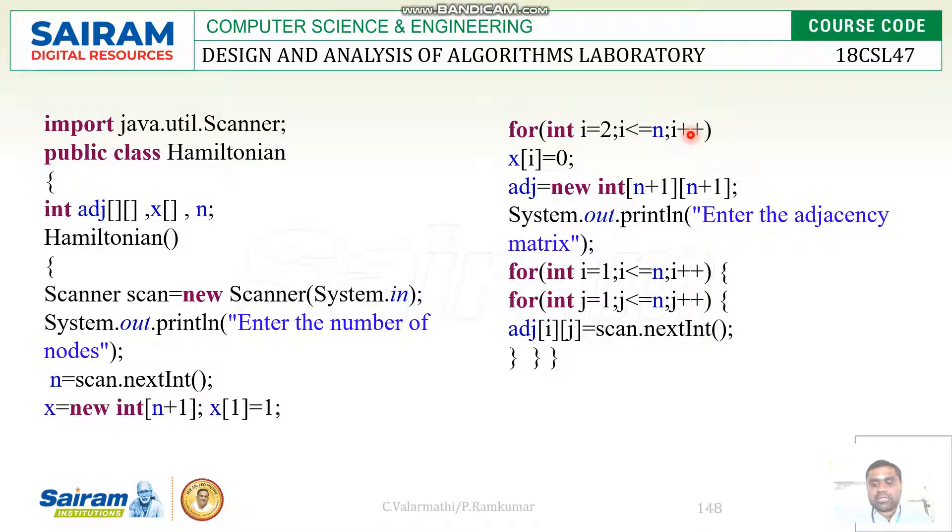Adjacency matrix means it has set of rows and columns where most probably we will assign all the diagonal elements as zero. Provided if we assign any value for the diagonal element, then there will be a self-loop.